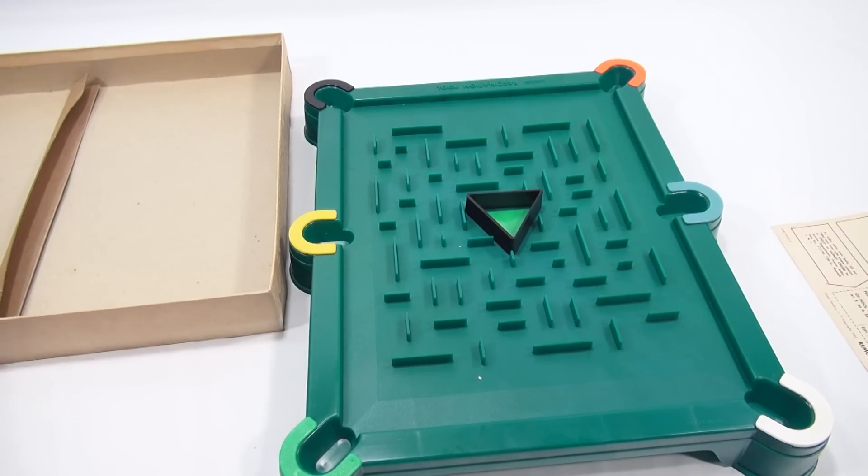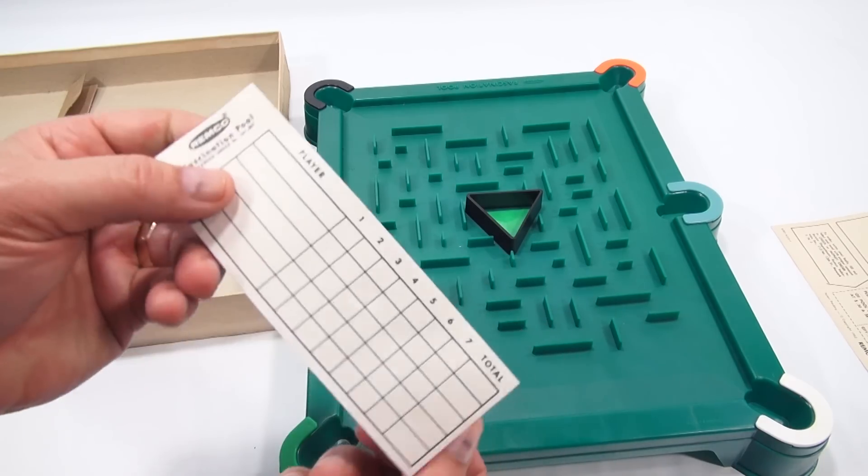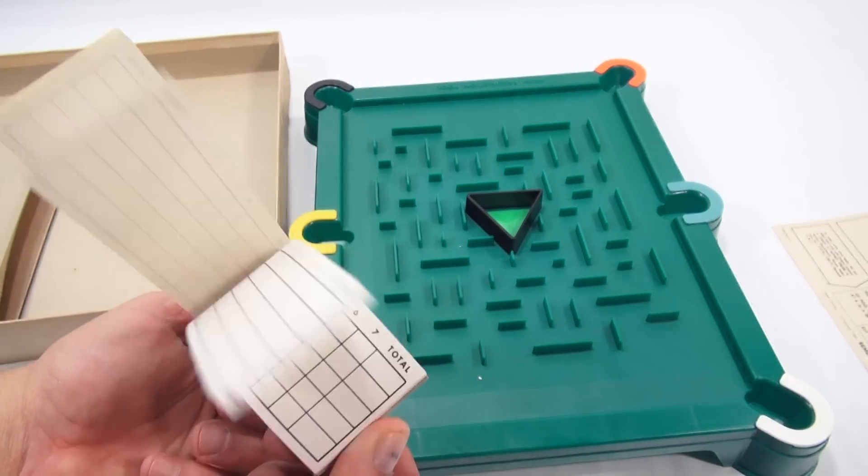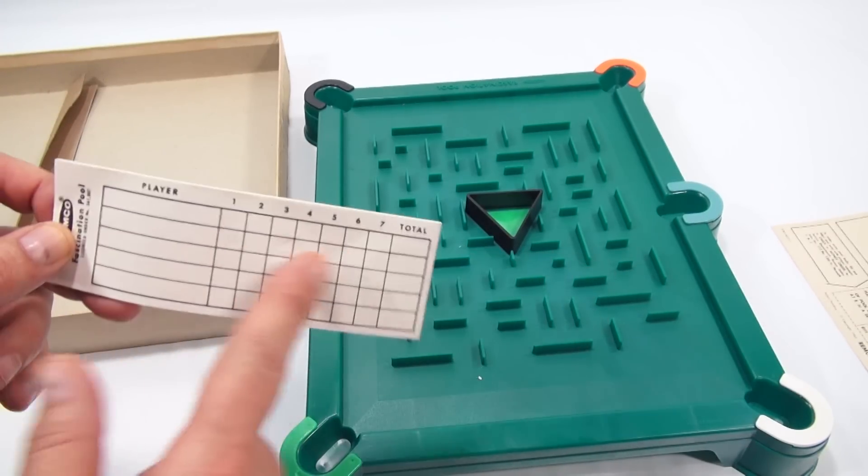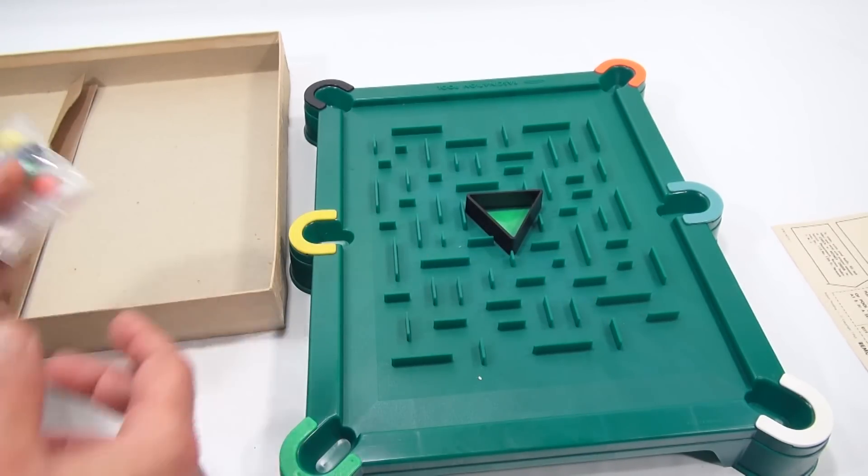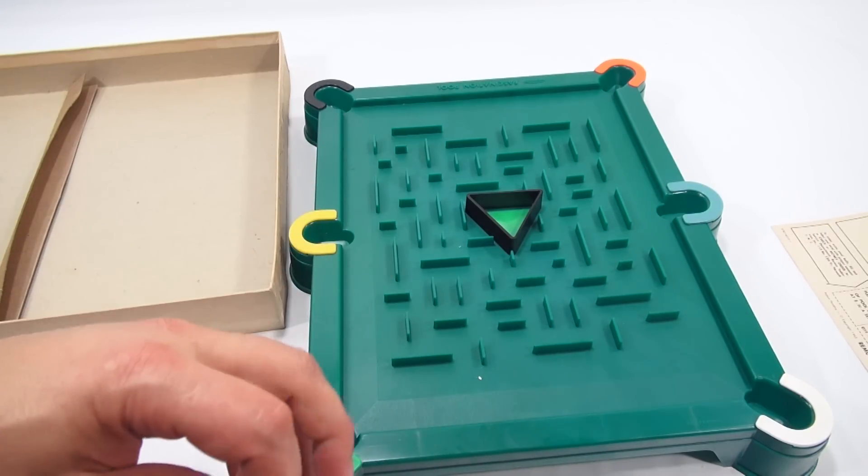Now here's the original score pad. Look at that, I don't think it's ever been used. You write your players' names and then your scores. Looks like there's maybe seven rounds. Here's the little balls that came with it, so drop those into the center.